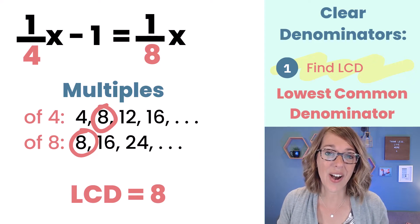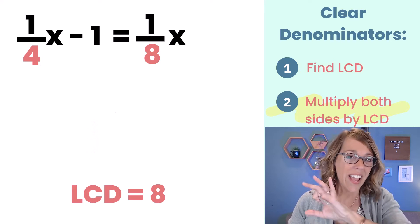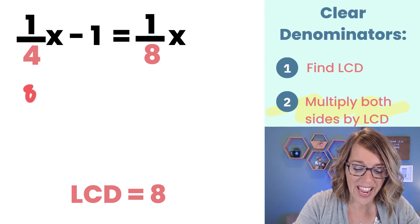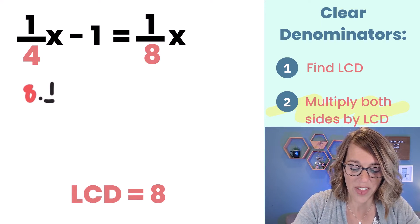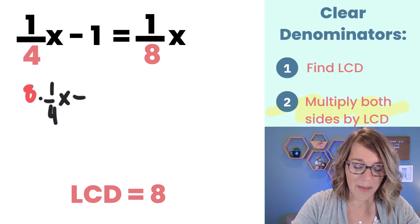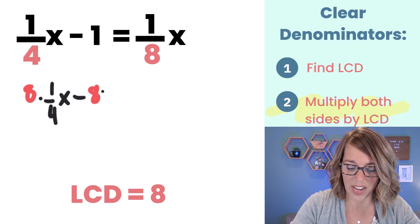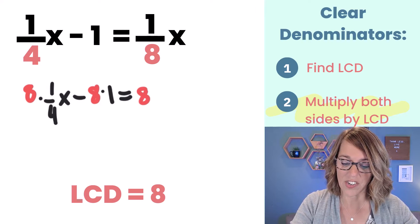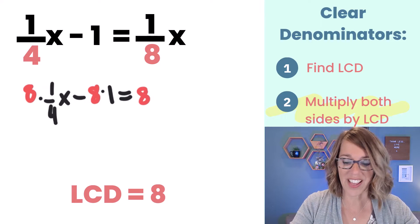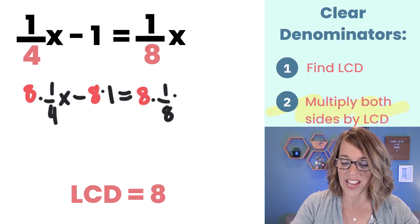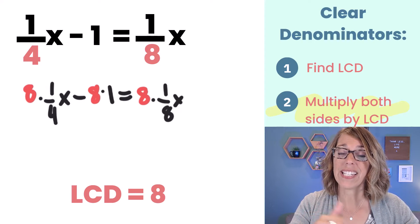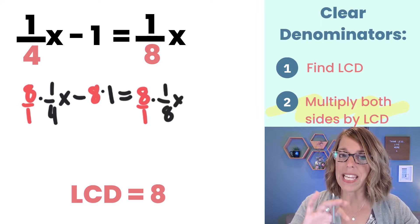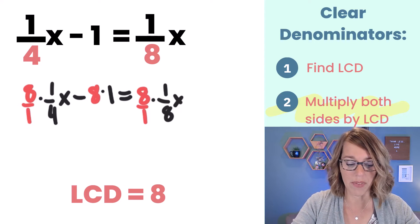So eight is our least common denominator and I want to multiply everything in this equation by eight. Here's what that looks like. I'm going to multiply eight times that first term which is 1/4x and then my minus sign and then I'm going to multiply eight times that one. On the other side of the equation I need to multiply by eight also to keep this equation balanced. Whatever I do to one side I do to the other. So this is eight times my 1/8x. As I'm multiplying by eight I'm actually thinking of this as multiplying by the fraction 8/1. That helps me keep the fractions lined up.